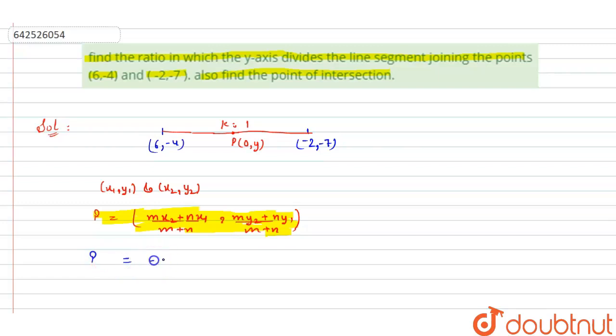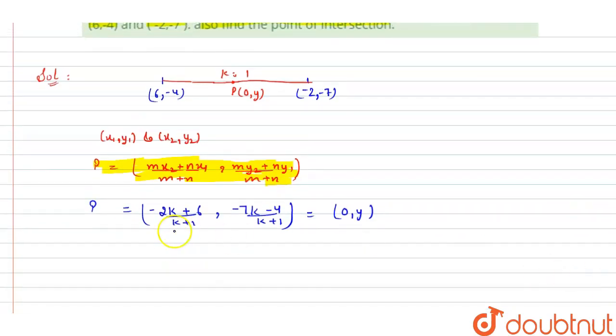(-2k + 6) divided by (k + 1) and (-7k - 4) divided by (k + 1). These are the coordinates and we have (0,y). Now comparing these two, what we are getting: